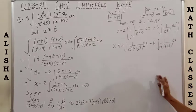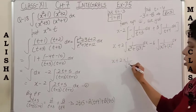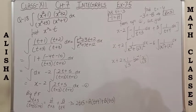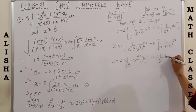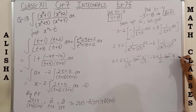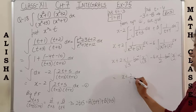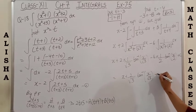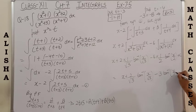Both terms are in the form x²+c², so we use the formula: the integral of 1/(x²+a²) = (1/a) tan⁻¹(x/a). Here a = √3, giving (1/√3) tan⁻¹(x/√3). For the second term a = 2, giving (1/2) tan⁻¹(x/2). The final answer is x + (2/√3) tan⁻¹(x/√3) − (6/2) tan⁻¹(x/2) + C, which simplifies to x + (2/√3) tan⁻¹(x/√3) − 3 tan⁻¹(x/2) + C.